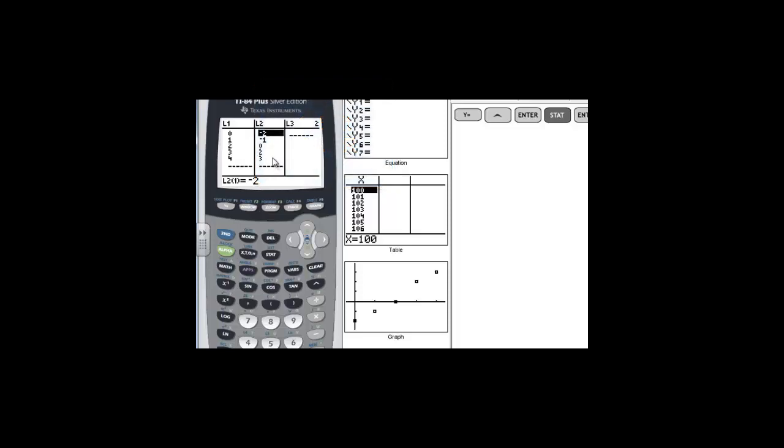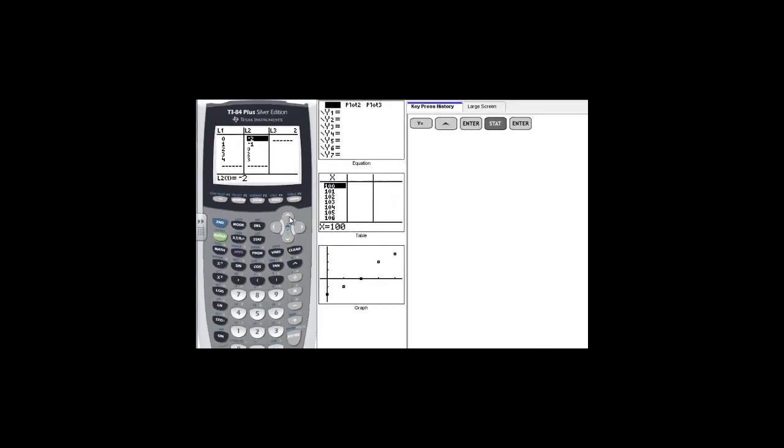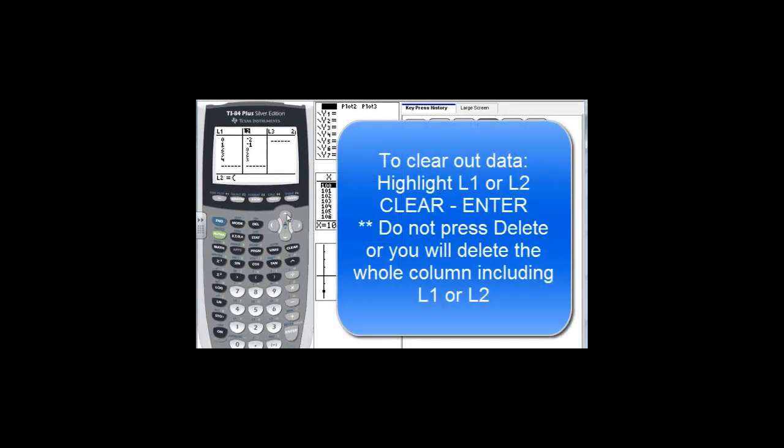And then in here we're going to put in our data, but let's clear out what we have here. If you have data in there like I do, just arrow up to L2 or L1, whichever one, clear, and then enter. We'll clear it all out. And then I want to do the same thing for L1, so I arrow over, arrow up to L1, clear, and then enter.